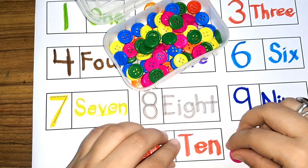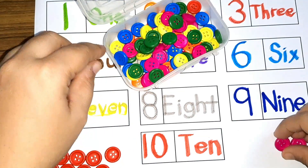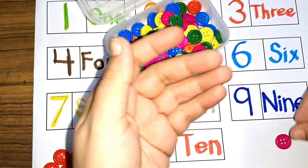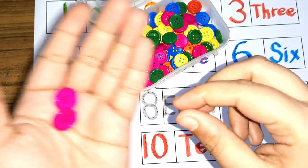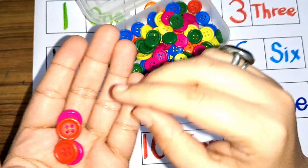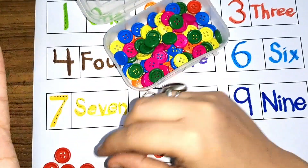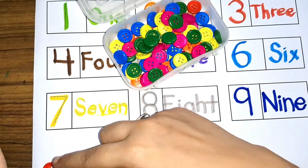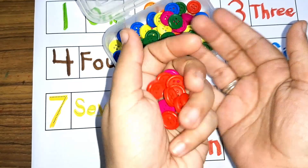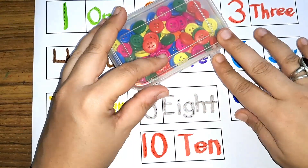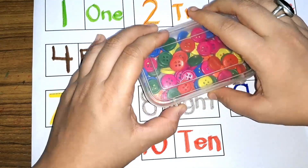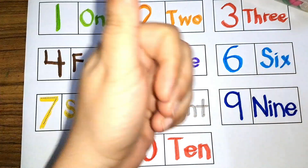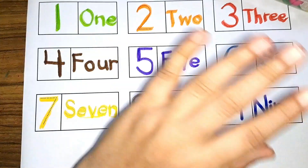And the last number is ten. Ten — one, zero — T-E-N — ten, one, two, three, four, five, six, seven, eight, nine, and ten — ten buttons. There you go! We have completed counting one to ten. We have seen the number names of one to ten. Don't forget to like and subscribe. Bye, see you later!